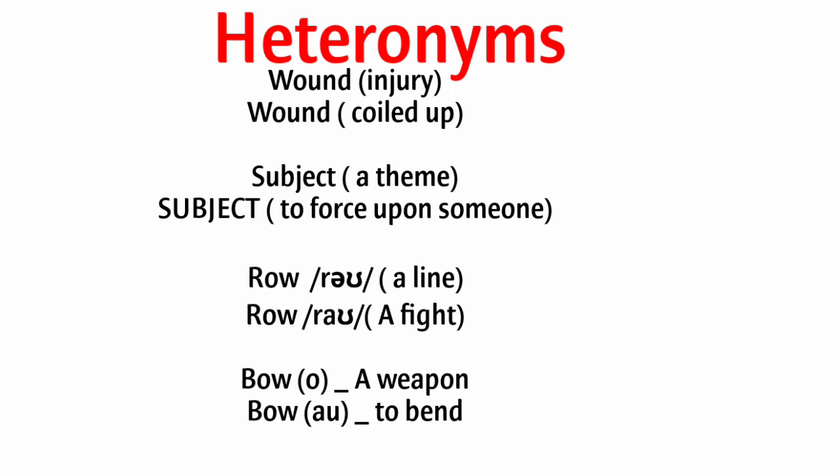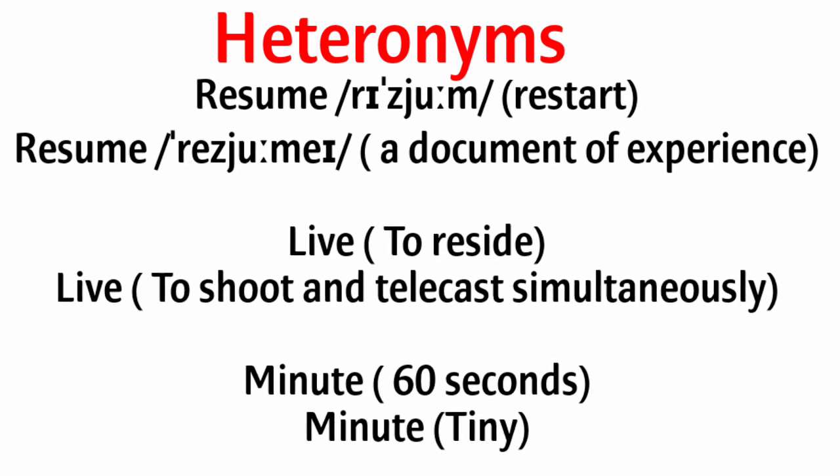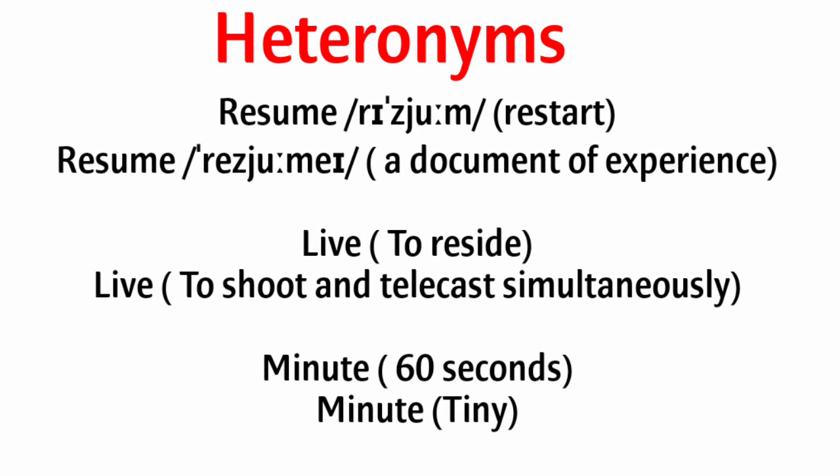More heteronym examples: wound — an injury; wound — coiled up. Subject — a theme; subject — to force upon someone. Row — a line; row — a fight. Bow — a weapon; bow — to bend. Resume — to restart; resume — a document of experience.